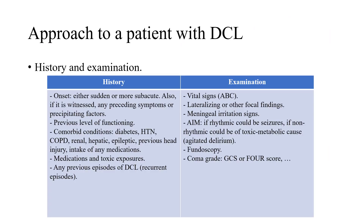When we have a patient with disturbed conscious level, we have to be systematic to reach the proper diagnosis. Starting with history, we have to focus on the onset — either sudden, subacute, or chronic disorientation as in dementia. Also, whether the disturbed conscious level was witnessed; some patients have seizures then become disturbed, and when this is witnessed it can explain the condition. Any preceding symptoms or precipitating factors should be noted.